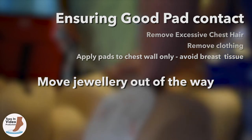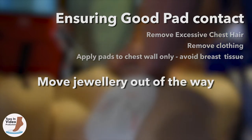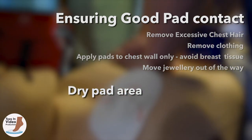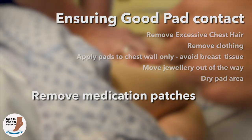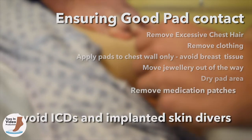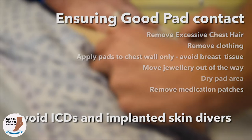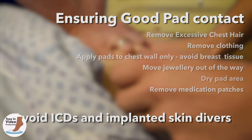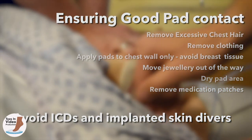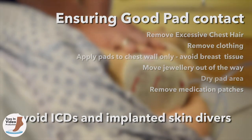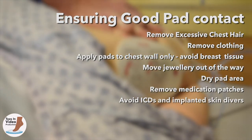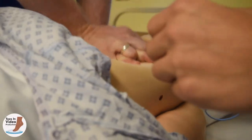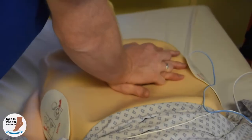Any jewellery such as necklaces does not have to be removed but must be moved out of the way and not covered by defibrillator pads. A dressing towel is provided to dry the area where the pads are to be placed if the patient is clammy, has been sweating or is otherwise visibly wet. If you can see medication pads when you expose the chest, remove them. Patients may have an implanted cardiac device or ICD just under the right clavicle — defibrillator pads must not be placed over this device, nor over any skin divers or dermal anchors around the clavicular area. If you cannot place pads in the standard positions, use the bi-axillary or transthoracic position with one pad under each armpit in the mid-axillary line.